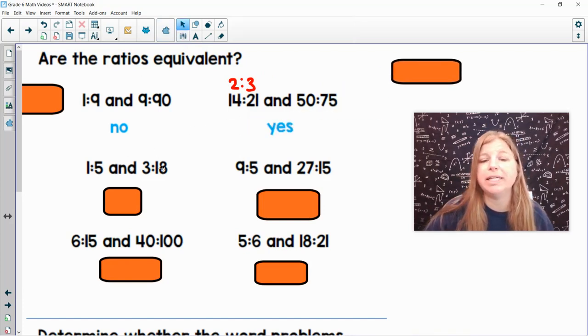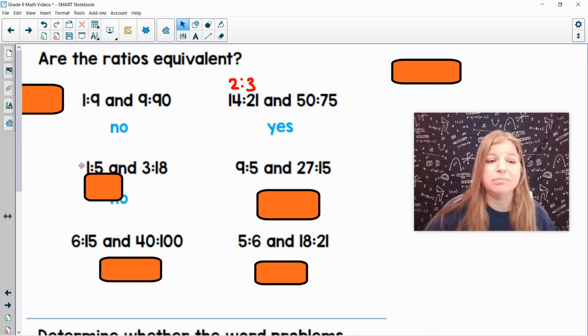1 fifth and 3 eighteenths. 1 fifth is simplified, but 3 eighteenths, that would simplify to 1 sixth. So nope, not equivalent.